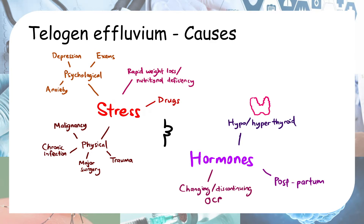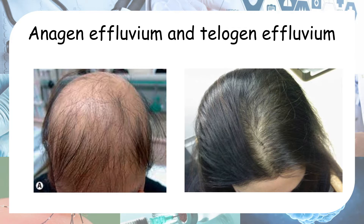We can gauge that telogen effluvium is more common in females because only females undergo postpartum changes, only females take oral contraceptive pills, and hypo- or hyperthyroidism is more common in females. The first picture shows anagen effluvium — more than 50% hair loss, usually caused by chemotherapy. The second picture shows telogen effluvium — less than 50% hair loss, usually due to stress or hormonal changes, occurring three to four months after the trigger.